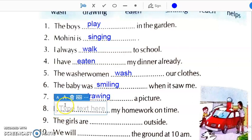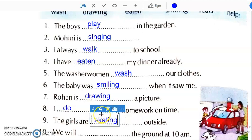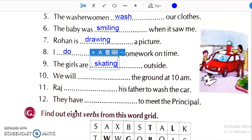Then, I dash my homework on time. I do my homework on time. Then, the girls are dash outside. Girls are skating. We have to select the word from the help box. These will be the appropriate words. You have to think according to the sentence. We will dash the ground at 10 a.m. We will reach.